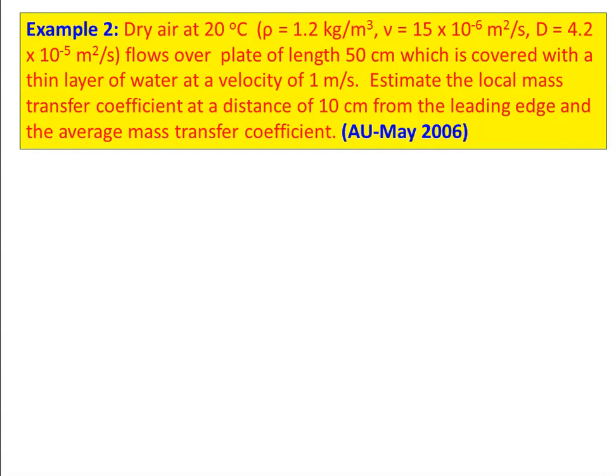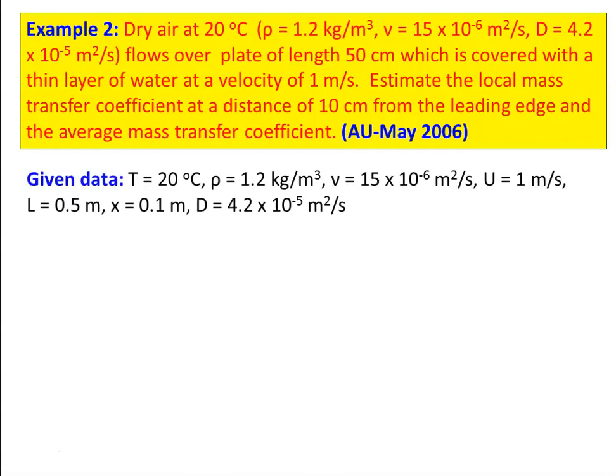Given data: temperature = 20°C, density ρ = 1.2 kg/m³, kinematic viscosity ν = 15 × 10⁻⁶ m²/s, velocity u = 1 m/s, length L = 0.5 m, position from leading edge x = 0.1 m, diffusion coefficient D = 4.2 × 10⁻⁵ m²/s.